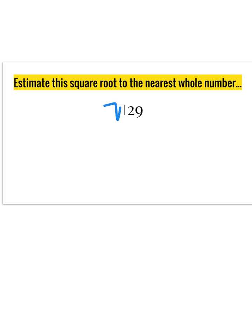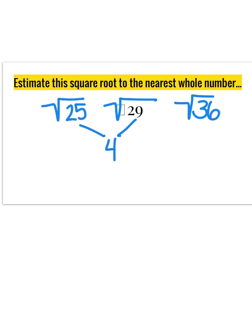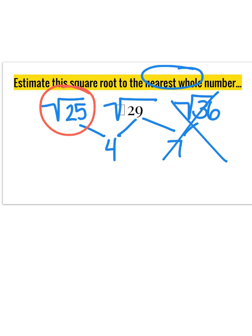Let's try one more — go ahead and pause and work this one out, then come back when you're ready to check. The square root of 29 will be somewhere between the square root of 25 and the square root of 36. These numbers are only 4 apart, whereas 29 to 36 are 7 apart. So for the nearest whole number estimate, the square root of 29 is closer to the square root of 25, which means my estimate is approximately 5.